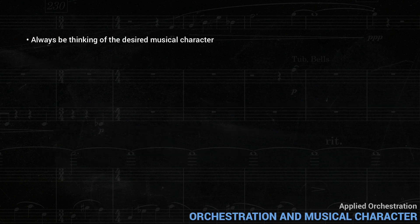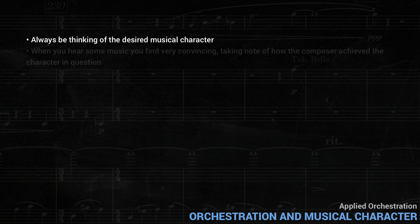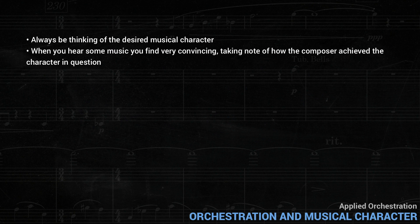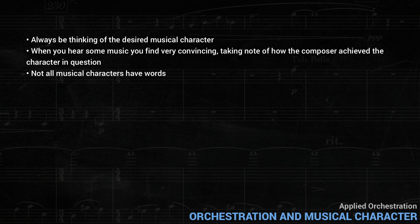The main idea here is to be always thinking of the desired musical character when making these decisions. Once you have your first character glossary set up, you can always add to it. For example, when you hear some music you find very convincing, take a note of how the composer achieved the character in question. These aren't simple recipes, but rather a way of thinking about the expressive side of the music. And by the way, not all musical characters have words — many complex emotional states that are hard to describe in words can be musically expressed. The words are only a starting point.